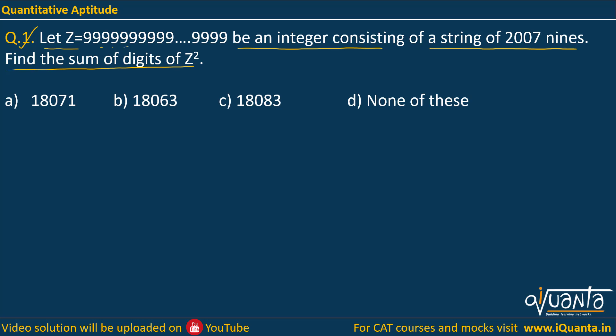Find the sum of digits of Z². Now how to solve this question? See, 99 is a very special number. You'll be using the value of square of 99 in a number of questions, so you must remember it. Basically, 99² is 9801.